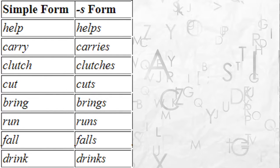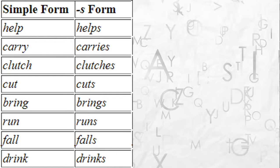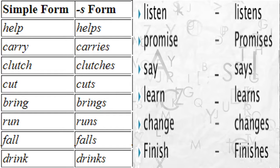Let's look at some examples of the S form. 'Help' becomes 'helps.' 'Carry' — you have the Y, drop it, and it becomes 'carries.' 'Clutch' — you add ES, giving 'clutches.' 'Cut' becomes 'cuts,' 'bring' becomes 'brings,' 'run' becomes 'runs,' 'fall' becomes 'falls,' and 'drink' becomes 'drinks.' Also: 'listen' becomes 'listens,' 'promise' becomes 'promises,' 'say' becomes 'says,' 'learn' becomes 'learns,' 'change' becomes 'changes,' and 'finish' becomes 'finishes.' This is the S form of the verb.